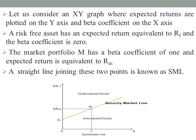A straight line joining these two points — the risk-free asset and the market portfolio — is known as the SML. Security Market Line is the graphical representation of CAPM and it shows the linear relationship between systematic risk and the expected return of a security or portfolio. This is all about SML. Now we will move on to the next concept, that is CML, Capital Market Line.